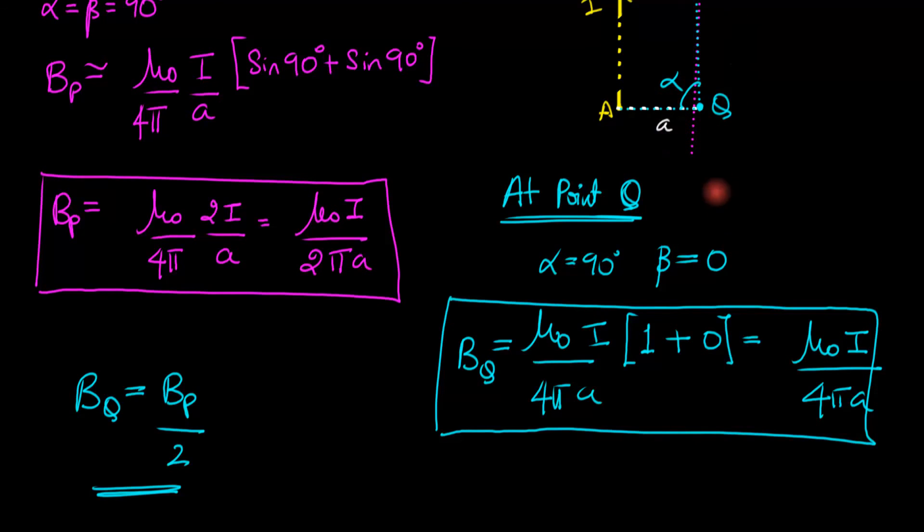But you travel parallel to the wire, farther and farther away from the point, and weaker and weaker becomes the magnetic field. See you next time.